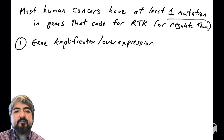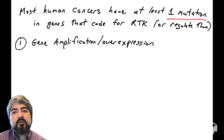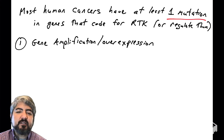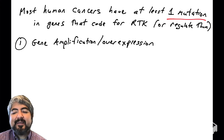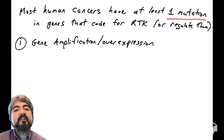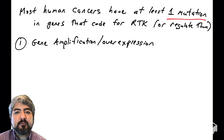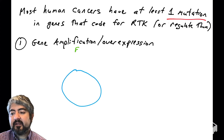The first example of a mutation we're going to talk about are gene amplifications. We covered mutations in a previous lecture, and if you recall, amplifications of a gene lead to overexpression of a protein — and we'll see an example of that here.